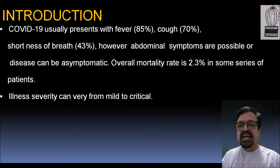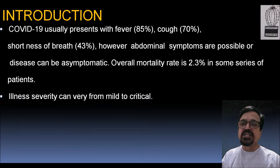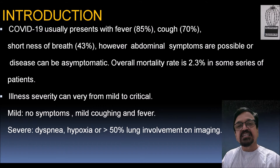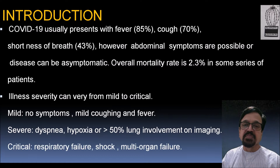Illness severity can vary from mild to critical. All management and radiological investigations depend on the severity of the disease — whether it is mild symptoms or critical — and whether there is any comorbidity. Mild means no symptoms or just non-specific symptoms like mild coughing and mild fever not specific to COVID-19. Severe means dyspnea, hypoxia, or lung involvement more than 50%. Critical cases involve respiratory failure, shock, and multi-organ failure.